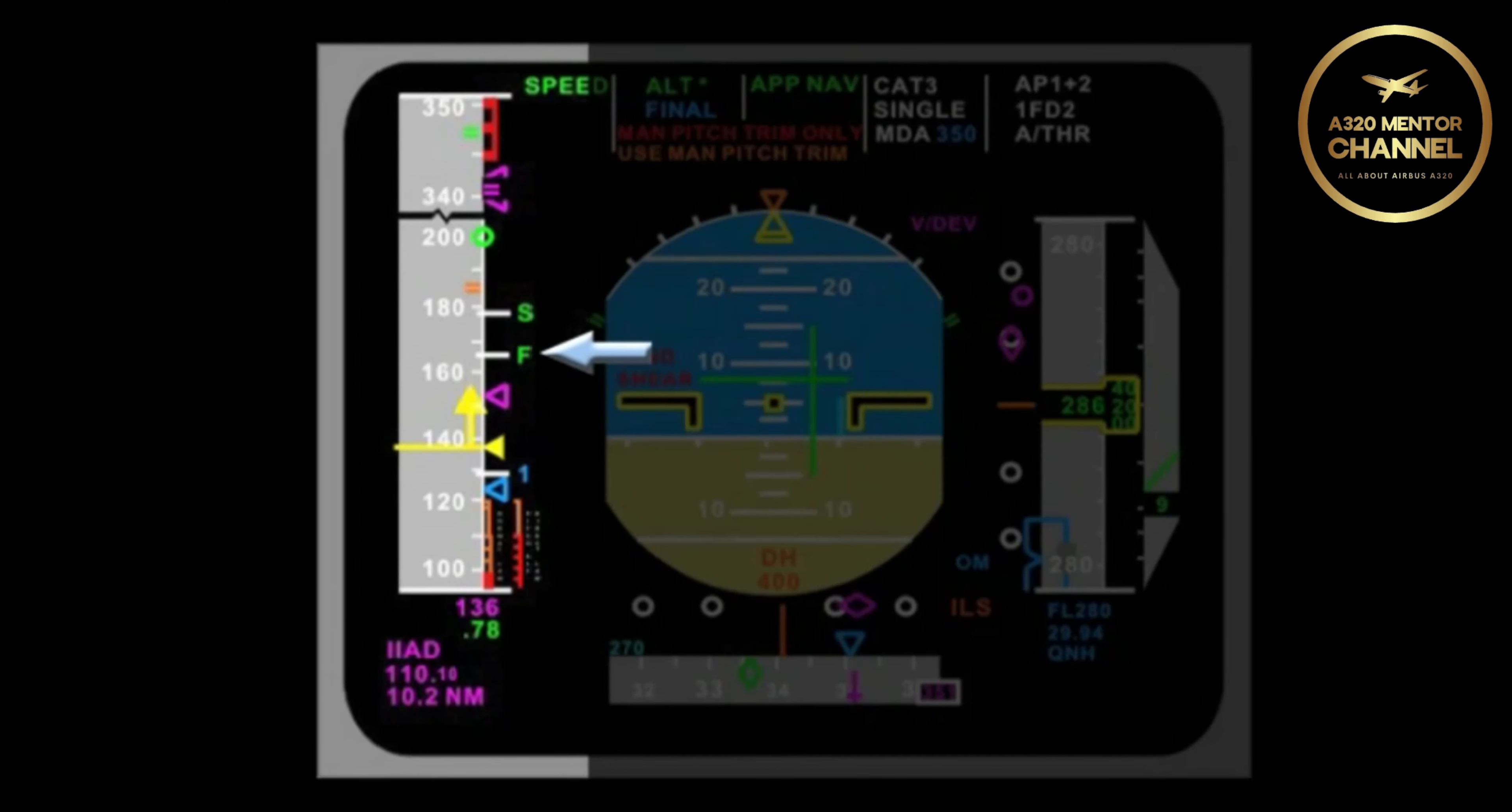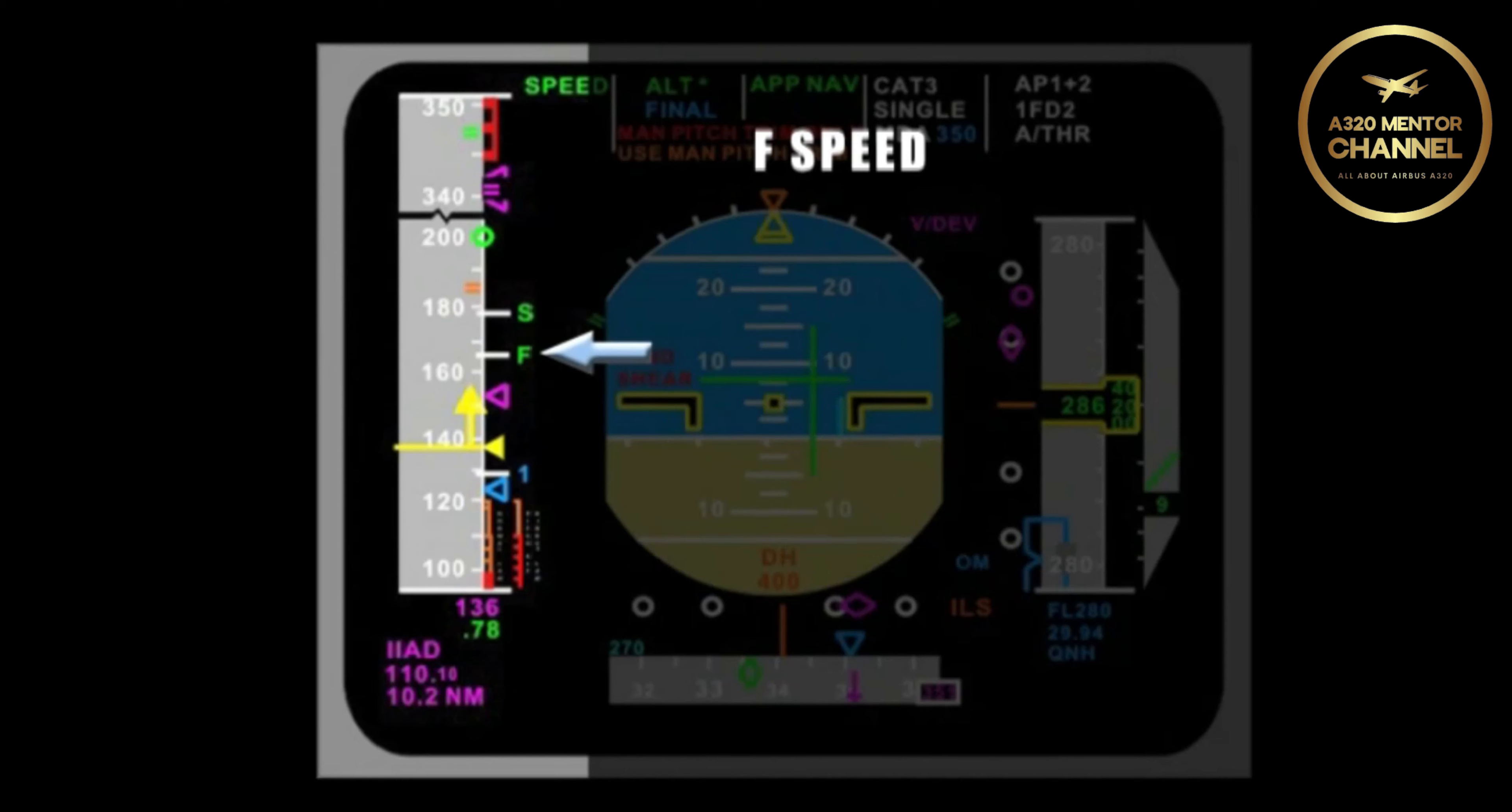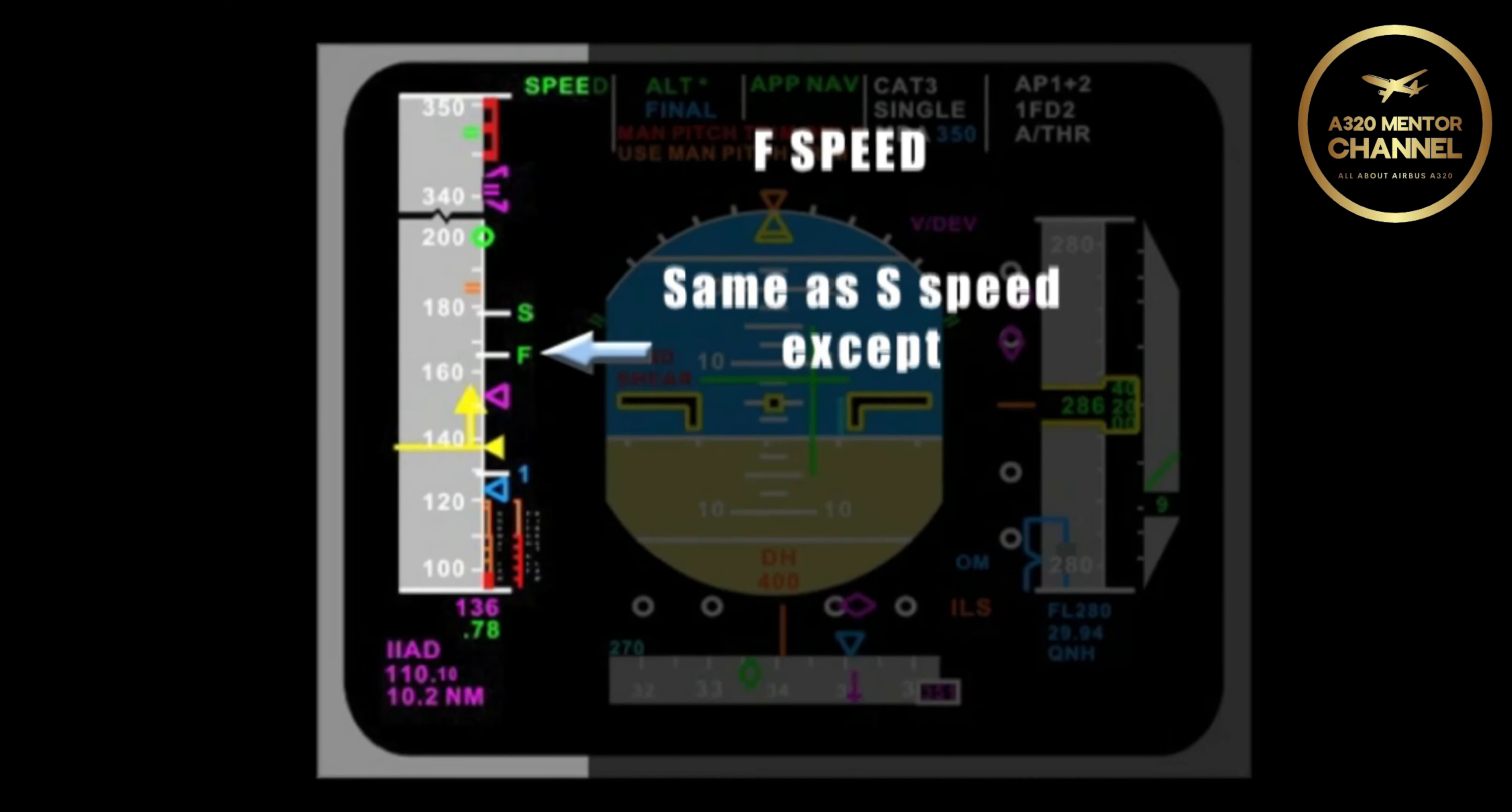What does the F represent? F speed is called the minimum flap retraction speed. Because the flaps are in position 2 or 3 during takeoff, as I accelerate through F speed, I can raise the flaps from either 2 or 3 up to 1. However, if I am flying in the approach phase of flight, and have the managed speed selected, the aircraft will fly that speed if autoflight autothrottles are engaged. F speed is basically the same thing as S speed, except F speed is really for flaps 2 or flaps 3.